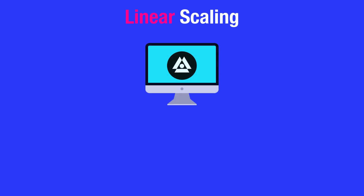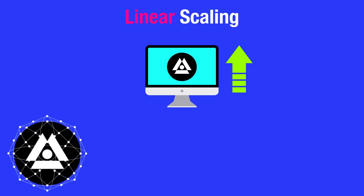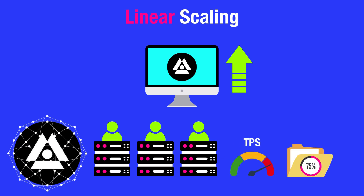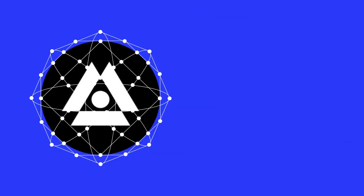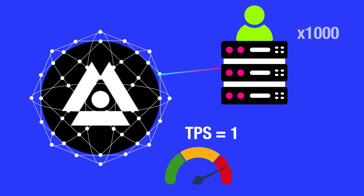Linear scaling refers to a system's ability to increase its capacity in direct proportion to the added resources. In Shardium, linear scaling means that as more nodes are added to the network, the transaction throughput and storage capacity increases proportionally. For example, let's presume each node added to the network provides one TPS.